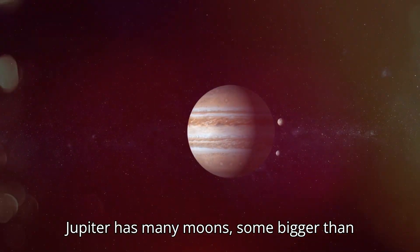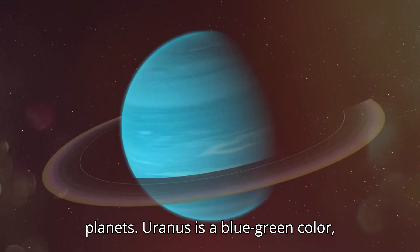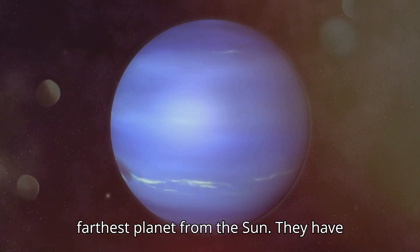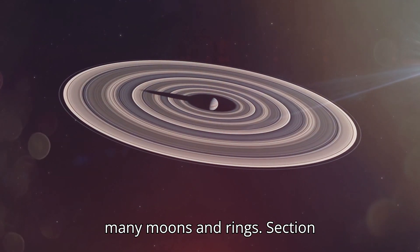Jupiter has many moons, some bigger than planets. Uranus is a blue-green color, a mysterious planet. Neptune is the farthest planet from the sun. They have many moons and rings.